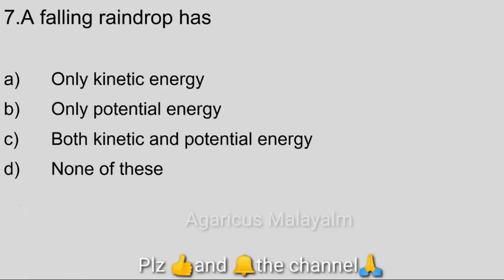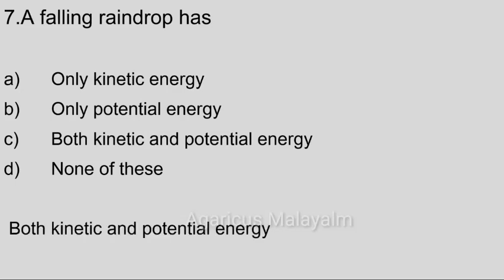Seventh question. A falling raindrop has. Answer options. Option A: only kinetic energy. Option B: only potential energy. Option C: both kinetic and potential energy. Option D: none of these. Correct answer: Option C, both kinetic and potential energy.